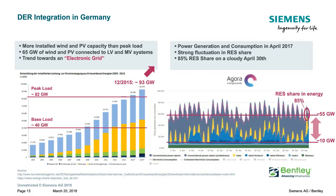This slide shows an example of DER integration in Germany, where wind and PV capacity now exceeds peak load. As distributed energy resources grow so fast, we have more generation than load, with approximately 65 gigawatts of wind and PV connected to the low- and medium-voltage systems. On the right is a picture of power generation and consumption in April 2017, where 85% of renewable energy was providing their share, creating grid operator challenges including voltage and frequency stability issues.